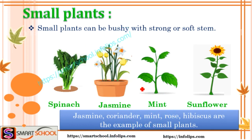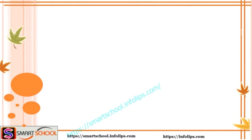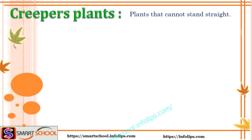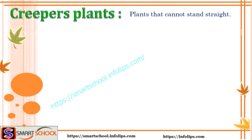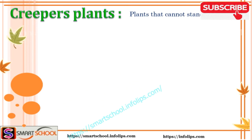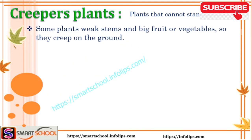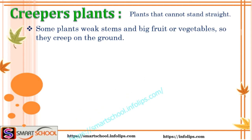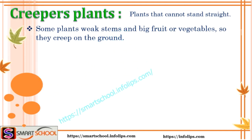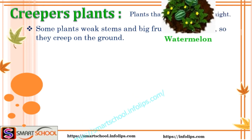Let's see the next type of plants: creepers. Plants that cannot stand straight are called creepers. Some plants have a weak stem and a big fruit or vegetable, so they creep on the ground and cannot grow up — we call them creepers.